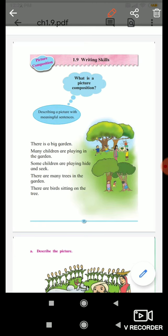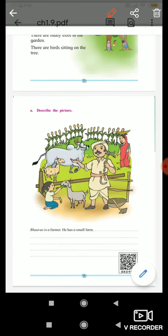So the next picture composition is on your screen. Bhau Rao is a farmer. He has a small farm.